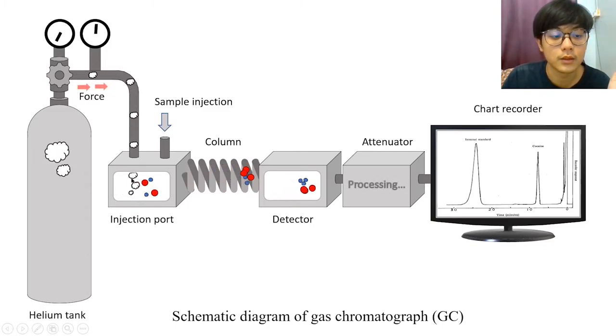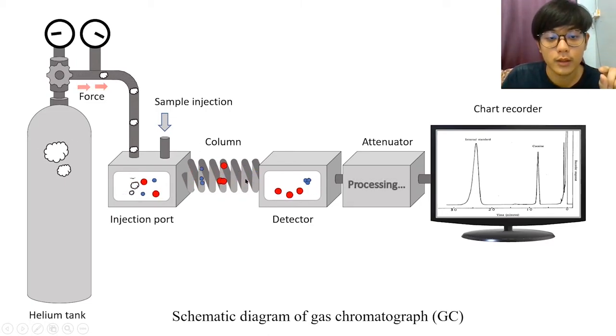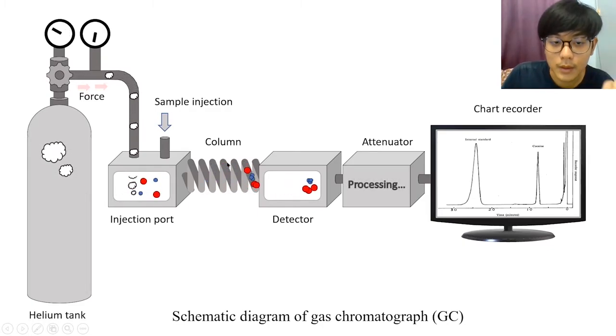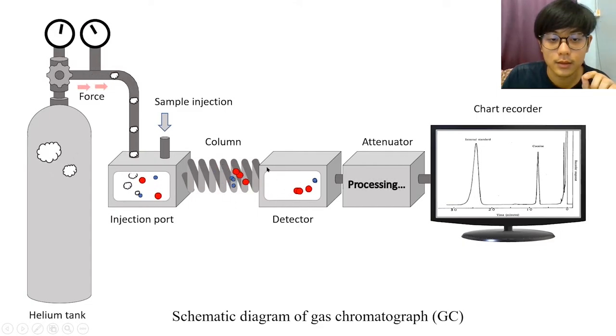The thrust from the helium gas will push the sample into the column. In the column, there are red and blue particles. Big particles obviously will move much slower than the small ones. So the small will travel first and reach the detector.